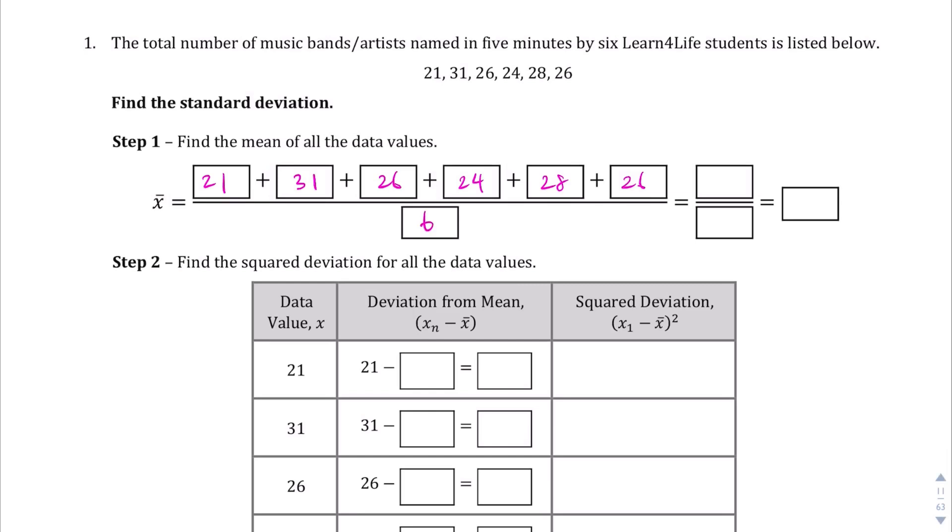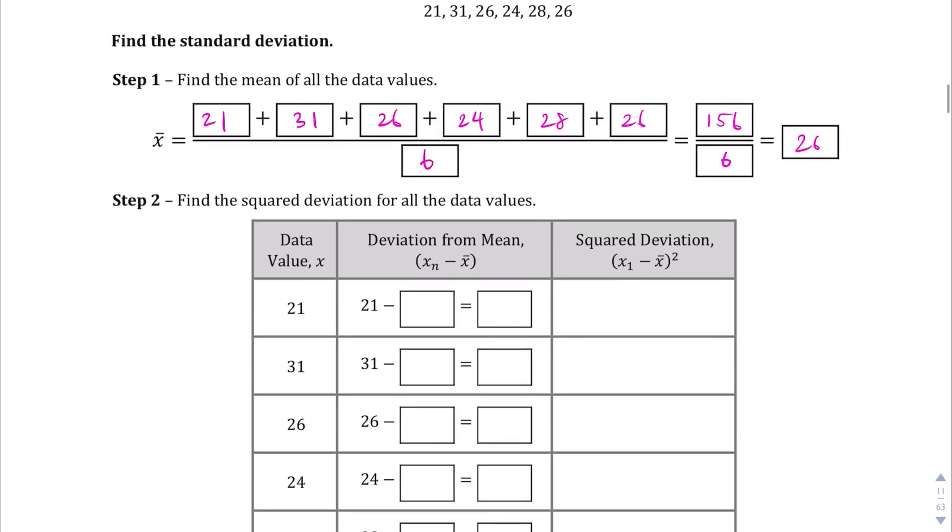So, whatever the numerator there is, we're going to add that together and then divide it by six. So, 156 is what I got from the calculator. Divided by six. And again, let me see, I haven't done this yet. 156 divided by six gives me 26. So, that's a nice whole number. That happens to be the mean or the arithmetic average of all those numbers together.